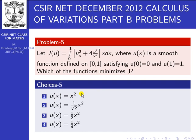The first option is the correct one. What about the second option? For the second option, u(0)=0 is correct, but u(1) = 1/√2, which is not satisfied — that does not equal 1. Option 3 gives u(1) = 1/2, and Option 4 gives u(1) = 1/4. Options 2, 3, and 4 do not satisfy the boundary condition. Only u(x) = x² satisfies both boundary conditions, so u(x) = x² is the correct option.